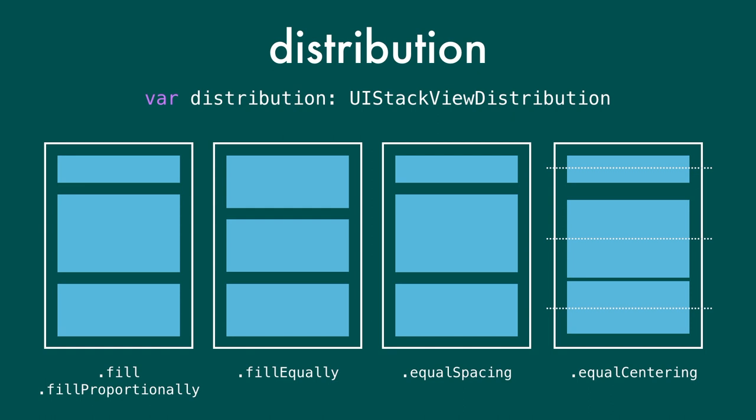The possible distribution values: fill and fill proportionally will fill the stack with items — enlarging or compressing items as needed. Fill proportionally does this proportionally based on original sizes, and fill uses content hugging and compression resistance priorities. Fill equally forces all elements to have the same height in a vertical stack view. Equal spacing and equal centering, instead of prioritizing element size, prioritize the spacing between elements, though they may still resize elements to match that spacing.